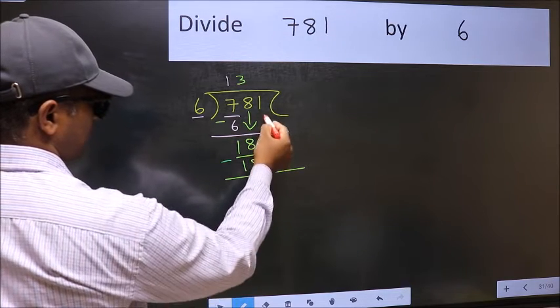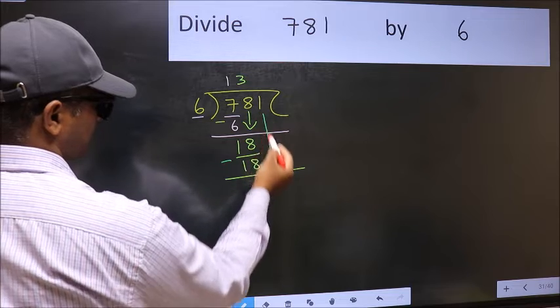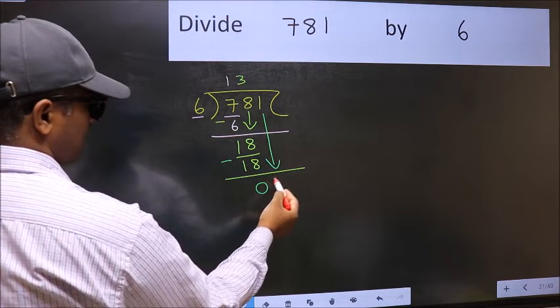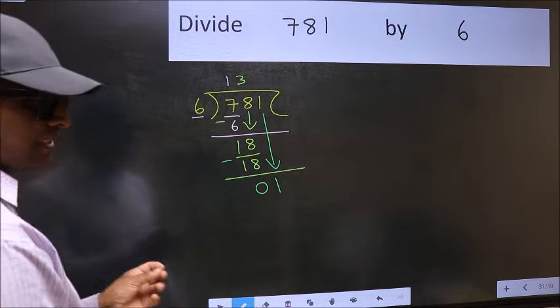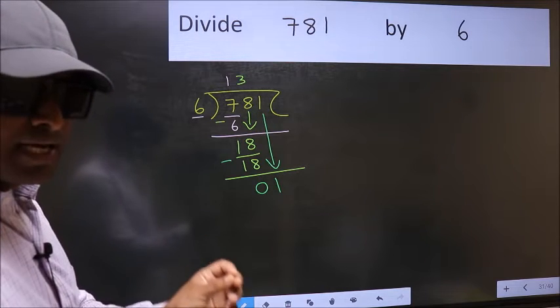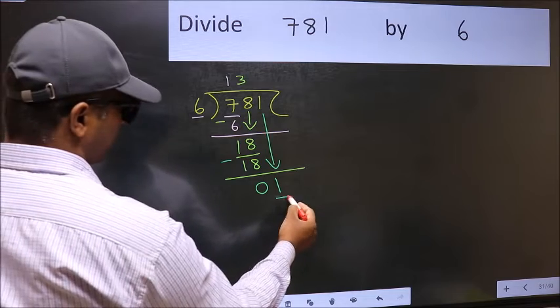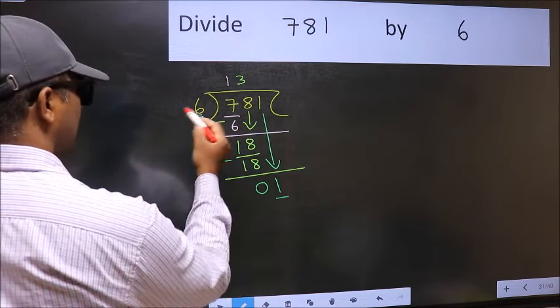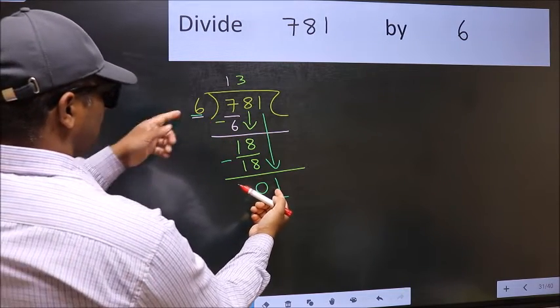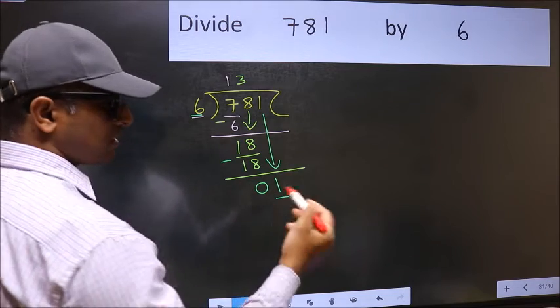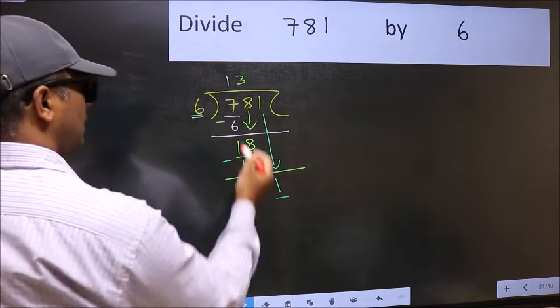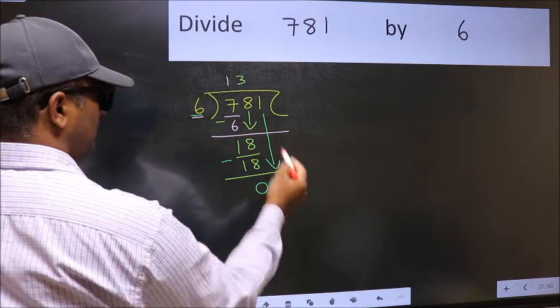After this, bring down the next number. So, 1 down. After this step, the mistake happens. And the mistake is this: here we have 1 and here 6. 1 is smaller than 6. So what many do is they directly put a dot and take 0.